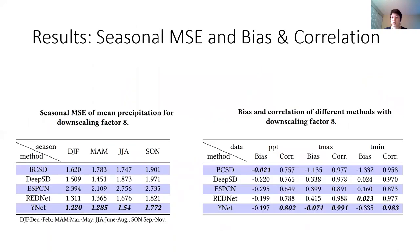We also compare the seasonal mean square error of mean precipitation, and bias and correlation for deep learning-based methods. Our method has the smallest error for all boreal seasons — winter, spring, summer, and autumn — and also performed best in most cases for bias and correlation.